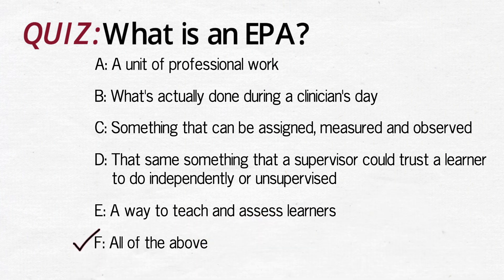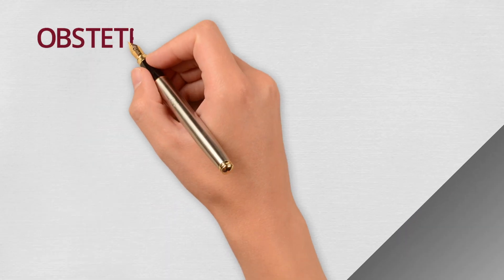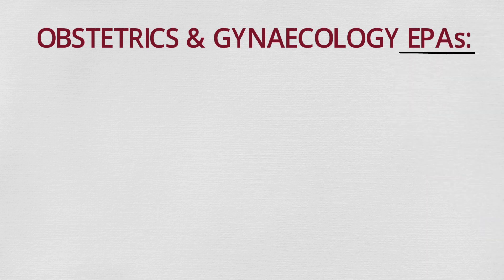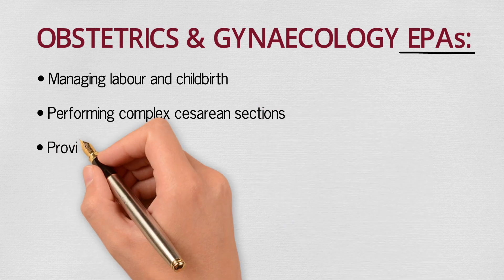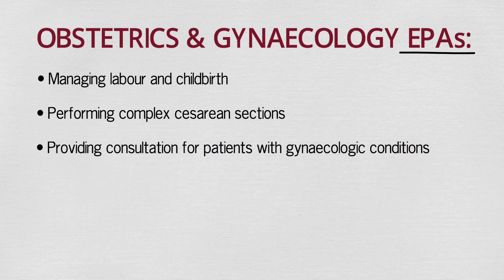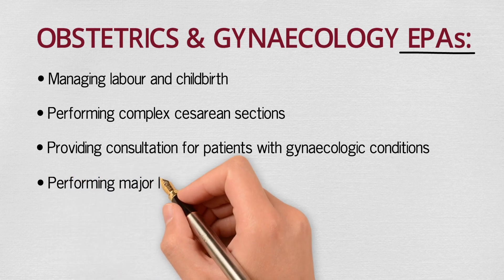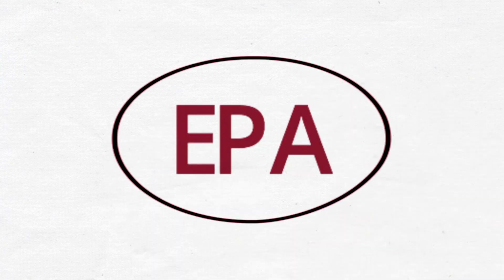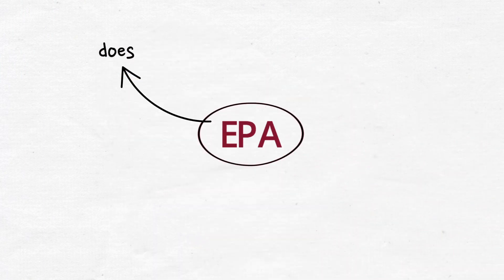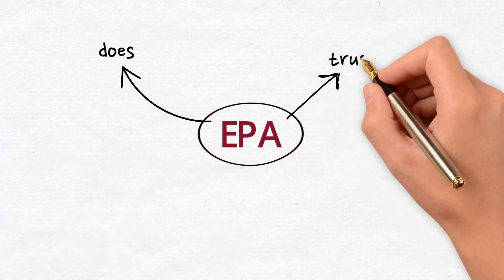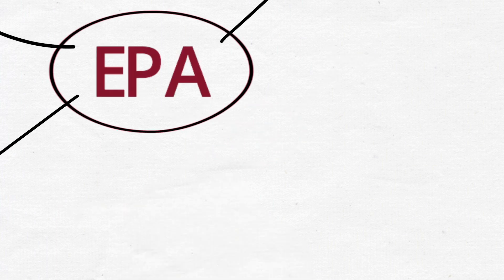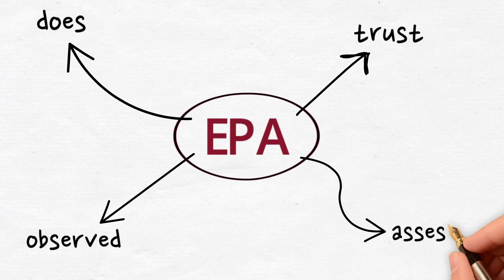It's no surprise that each of these describes an EPA. Let's review some concrete examples. These are some of the 33 EPAs for obstetrics and gynecology: managing labor and childbirth, performing complex cesarean sections, providing consultation for patients with gynecologic conditions, and performing major laparoscopic gynecologic procedures. Each EPA is a unit of work outlining something an obstetrician and gynecologist actually does. You could also imagine your resident being trusted to function independently for each of those activities, and it's something on which a learner could both be observed and assessed.